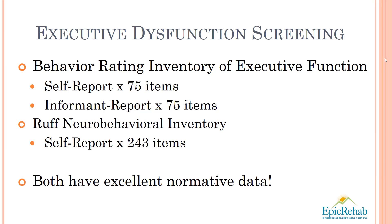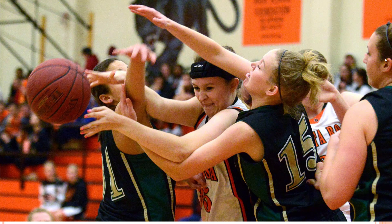These are the two measures that I use. The Behavior Rating Inventory of Executive Function, or BRIEF, is comprised of 75 items. It has separate self-report and informant report formats with good normative data. The RNBI neurobehavioral inventory is comprised of 243 items in a self-report format with good normative data. I more often use the BRIEF. I would like to provide you with one simple case study. We will use data from the BRIEF to construct two executive dysfunction profiles.